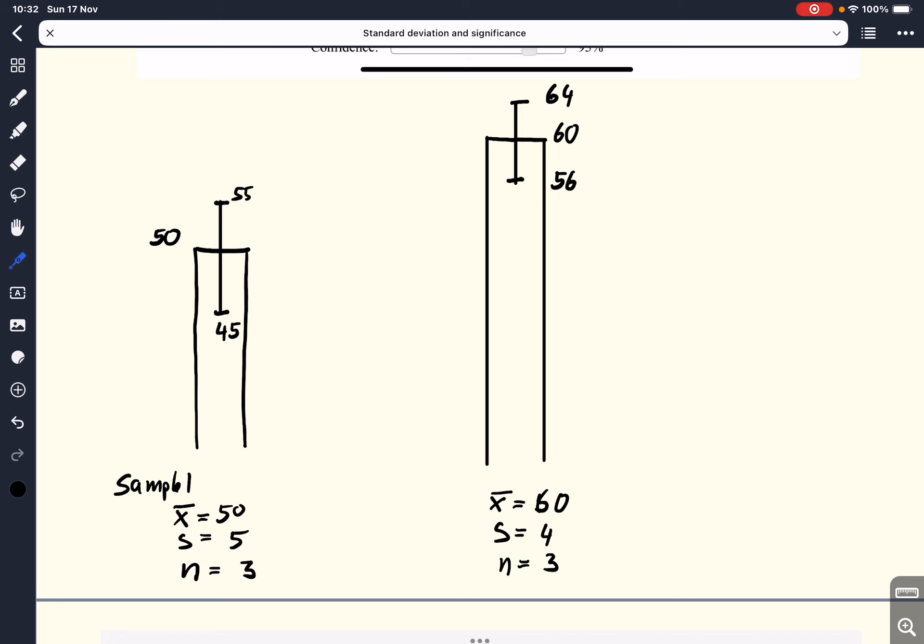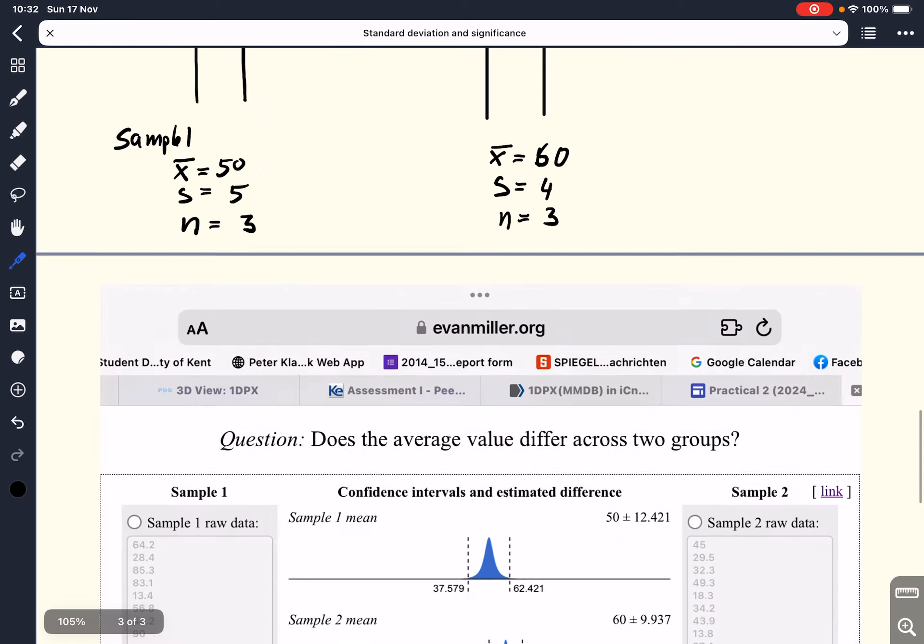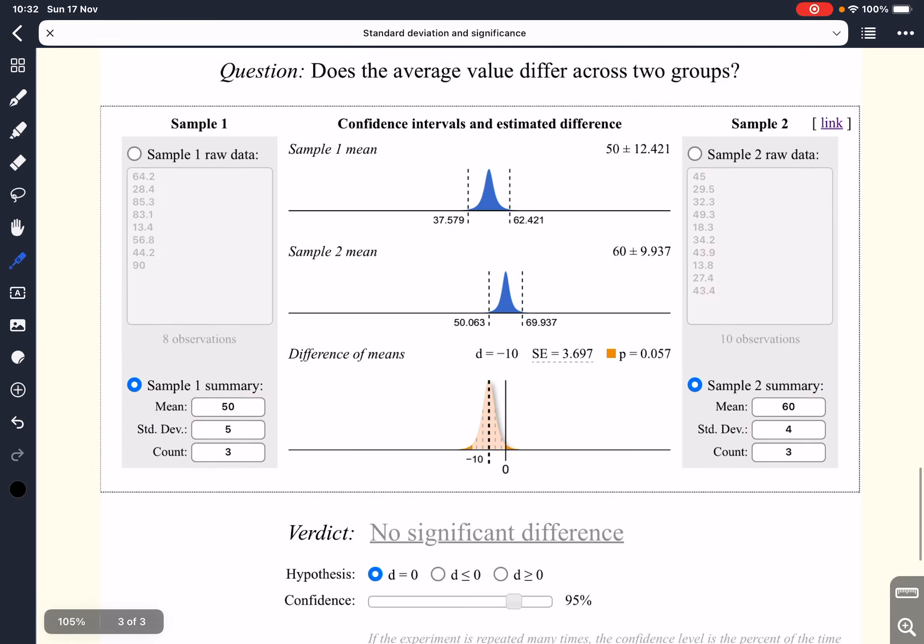Now let's do the t-test again. We make the assumption that the data are continuous and that they are from normal distributed population. So we can use our t-test calculator, evanmiller.org, which is a fantastic calculator. So here we've got the sample summary, 50 for the mean, 5 for the standard deviation, 3 for the observations. And sample two, we have 60, 4, and 3. And we ask the calculator to find the p-value.